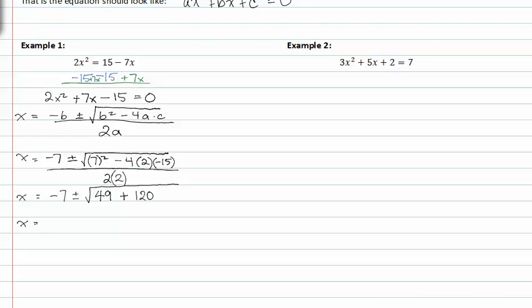x is equal to negative seven plus or minus the square root of one sixty nine all over four. One sixty nine happens to be the perfect square of thirteen. So x is equal to negative seven plus or minus thirteen over four.